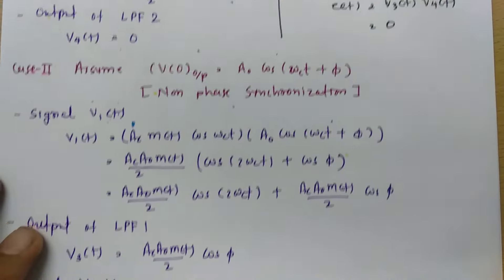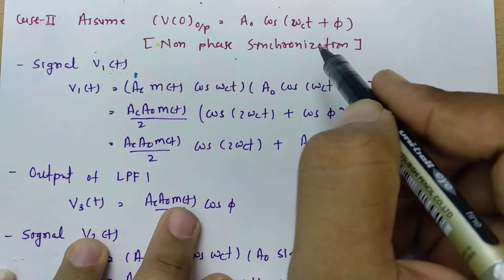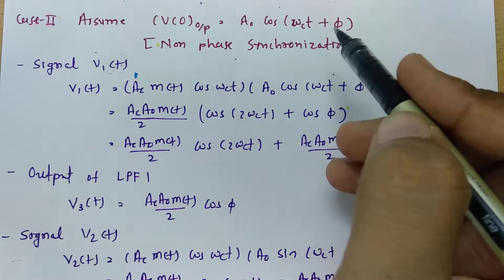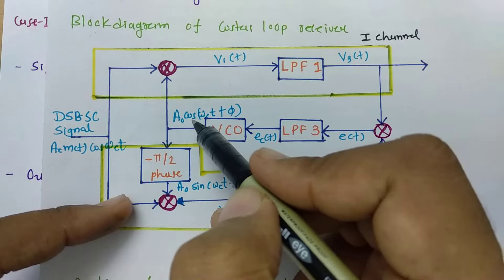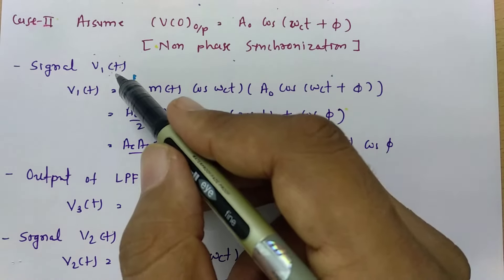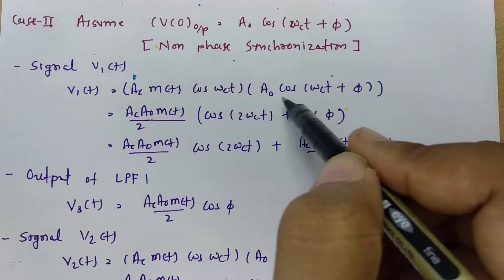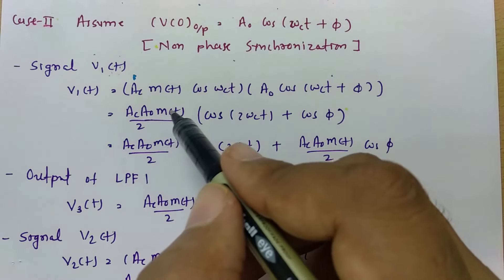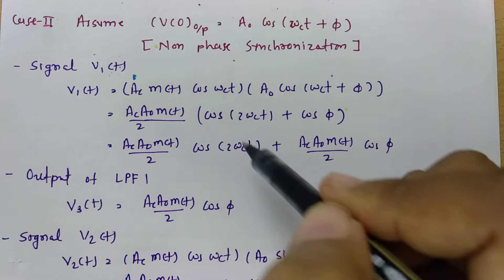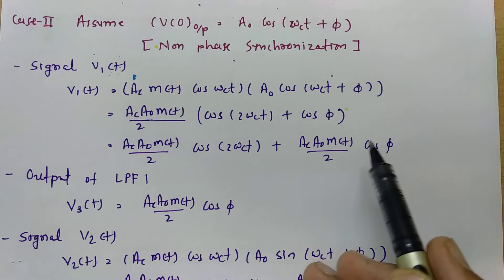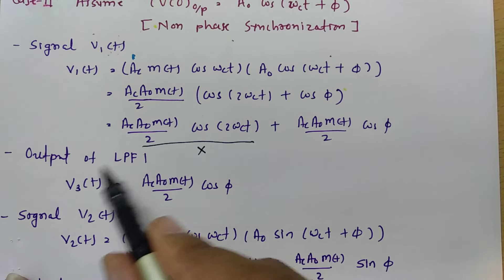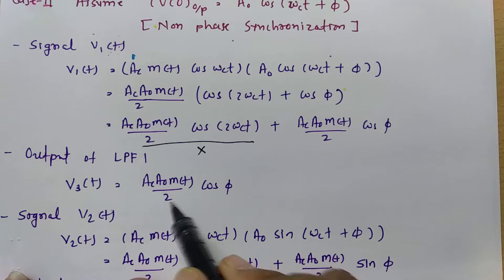In Case 2, consider a non-phase-synchronized signal. The VCO output will be A₀·cos(ωc·t + φ). Computing V1(t) as the DSBSC signal multiplied by A₀·cos(ωc·t + φ) results in two components: AC·A₀·m(t)/2·cos(2ωc·t + φ), which is the high-frequency component, and AC·A₀·m(t)/2·cos(φ), which is the low-frequency component. After passing through low pass filter 1, the high-frequency component is removed, giving V3(t) = AC·A₀·m(t)/2·cos(φ).